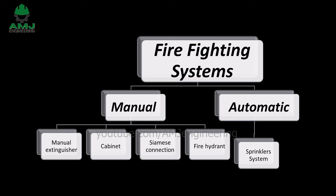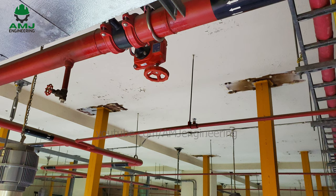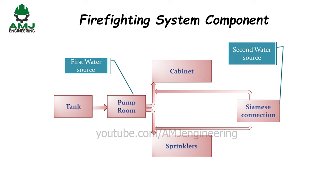Manual fire fighting systems include extinguishers, fire cabinets, Siamese connections, and fire hydrants. These require the physical intervention of manpower to fight the fire. Automatic systems, as the name says, fight the fire automatically without human intervention — and that is what a sprinkler system does. Here is a schematic diagram of the system components. Usually both systems exist in all buildings to form a competent firefighting system matching NFPA standards.